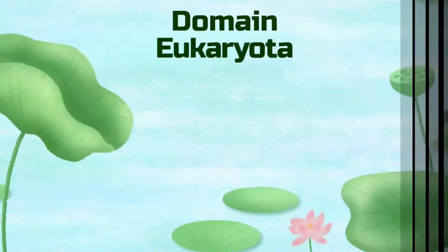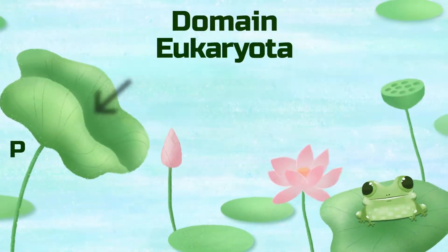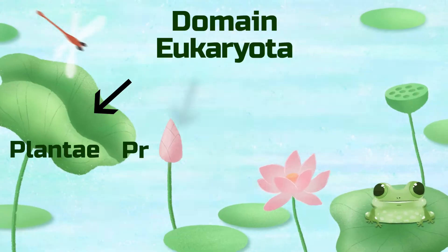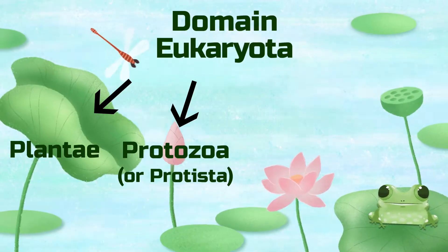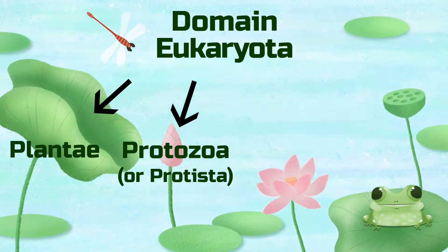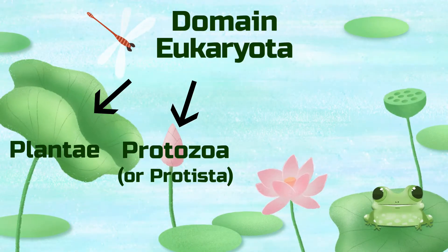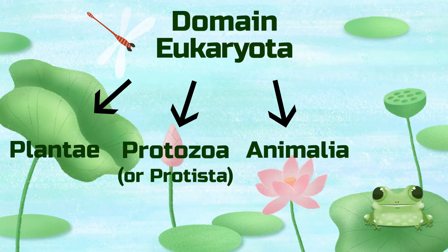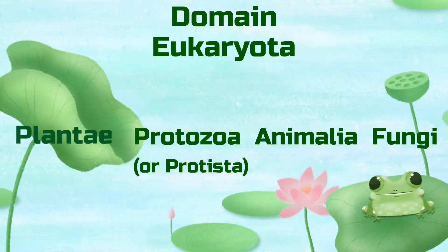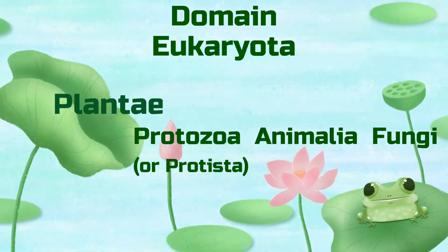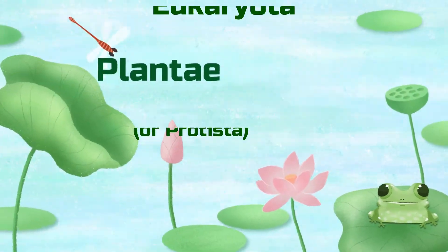These four kingdoms are called Plantae; Protozoa, which are generally microscopic single-celled organisms; Animalia, or what we call animals; and Fungi. All plants can be found in the kingdom of Plantae, but furthermore, plants can be broken into two main groups.